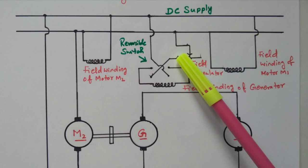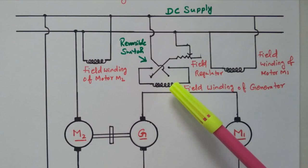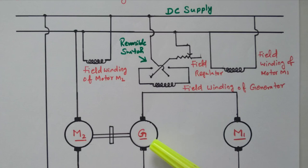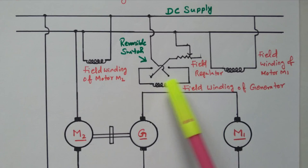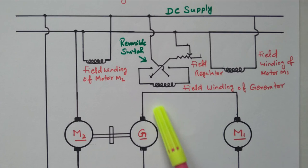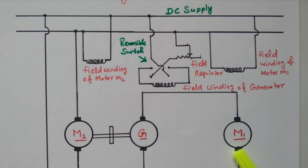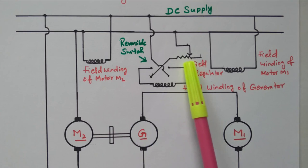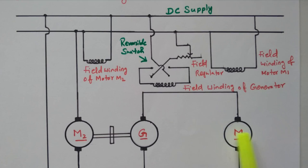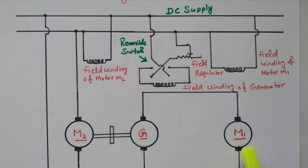Additionally, a reversible switch is available. By reversing the switches, negative voltage is applied to the motor so that the direction of rotation of motor M1 can be reversed. So two operations are possible: speed control by applying variable voltage using the field regulator, and reversing the rotation of the motor using the reversible switch. By reversing the switches the voltage applied becomes negative, so the motor rotates in the opposite direction.